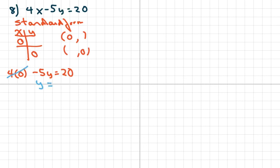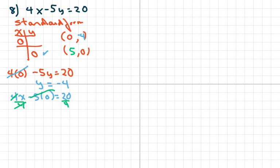Now when y is 0, I write 4x minus 5 times 0 equals 20. That part goes away, so divide both sides by 4 and you get 5. My y-intercept is (0, -4) — 1, 2, 3, 4 — there's that point. My x-intercept is (5, 0) — 1, 2, 3, 4, 5. Then you just connect the dots and there's your line.